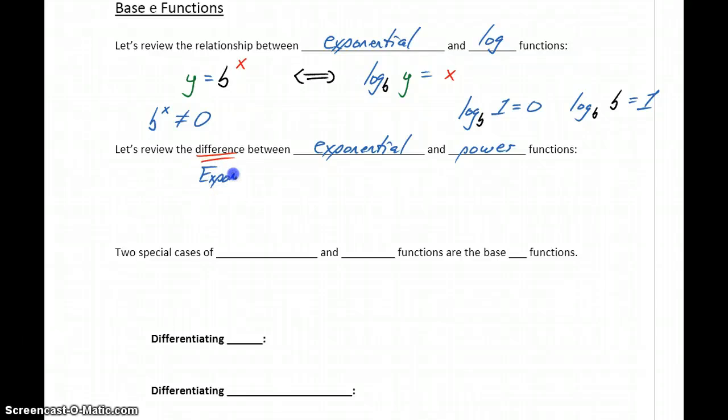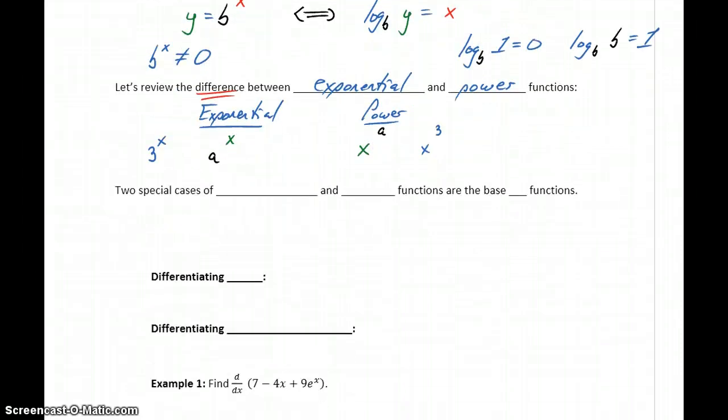So if we have an exponential function, then we want to keep in mind that we're going to have some constant as the base raised to a variable power. In a power function, those two things are reversed. The base is a variable, and it's being raised to some constant power. So an exponential function would be something of the form 3 to the x power. A power function would be something like x cubed. So we need to pay attention to where that variable is, where the constant is, to identify whether we have an exponential or a power function.